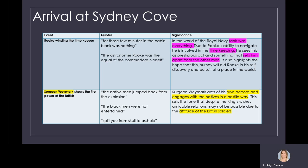Let's look at the arrival of the first fleet at Sydney Cove. The initial event of significance is Rook winding the timekeeper. In the world of the Royal Navy, rank was everything. Due to Rook's ability to navigate on board the ship Sirius, he is involved in timekeeping. He sees this as a prestigious act and something that sets him apart from the other men. It also highlights the hope that this journey will aid Rook in his self-discovery and pursuit of a place in the world.